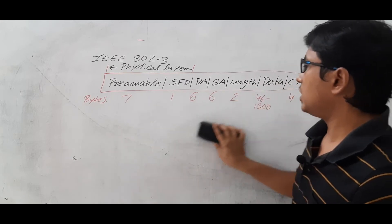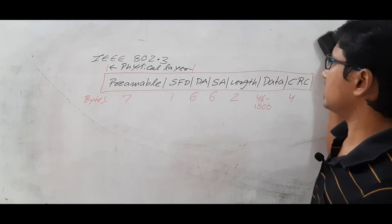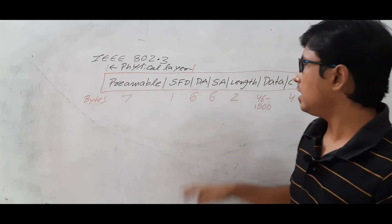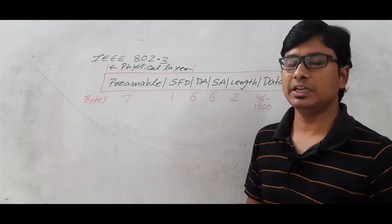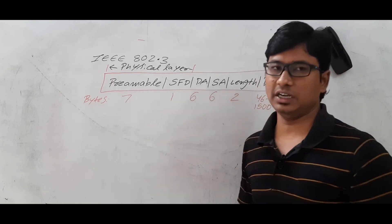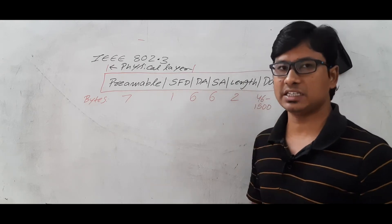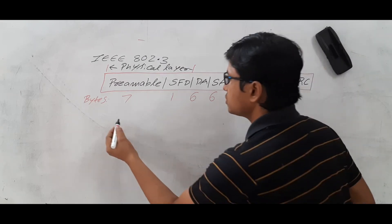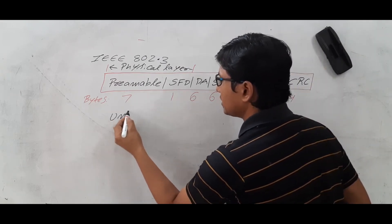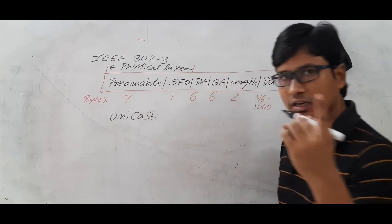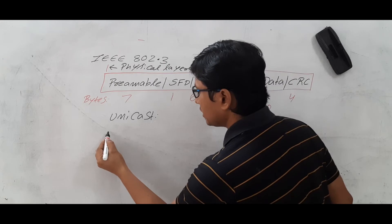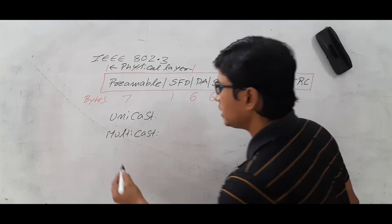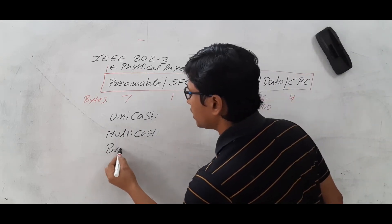Now, the destination MAC address identifies to whom you want to send the frame. The destination MAC address can be a unicast address — sending to a single destination — or multicasting to a group of nodes, or broadcasting. So the destination MAC address can be unicast, multicast to a group of people, or broadcast to everyone.